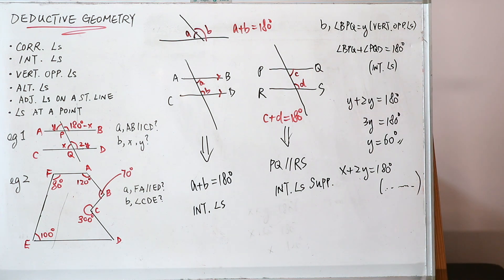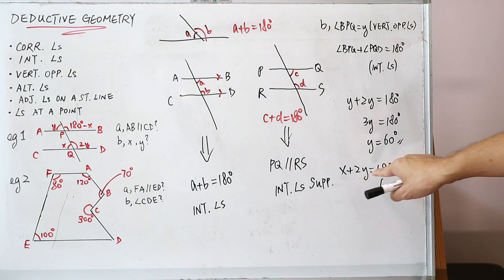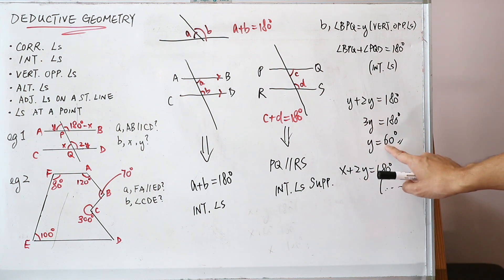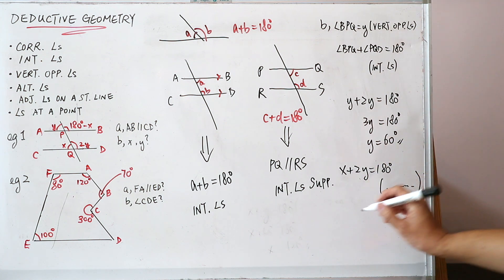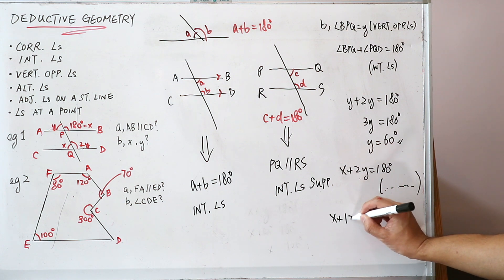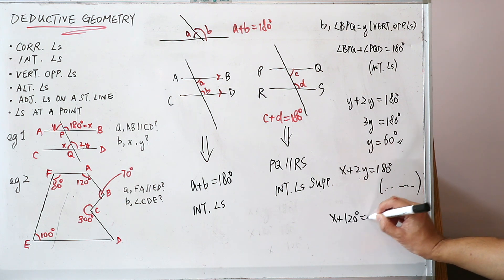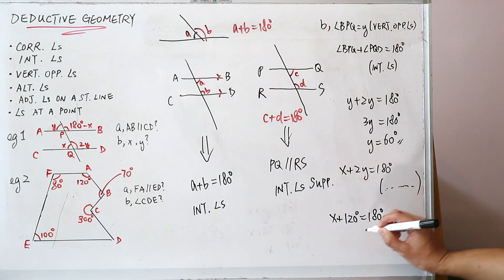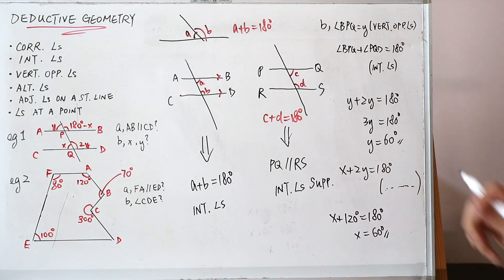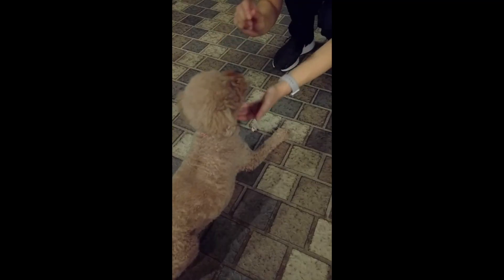So X plus 2Y equals 180 degrees, and we already know Y is 60 degrees. So X plus 120 degrees equals 180 degrees, giving X equals 60 degrees. That's the answer.